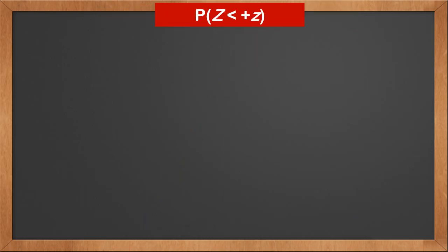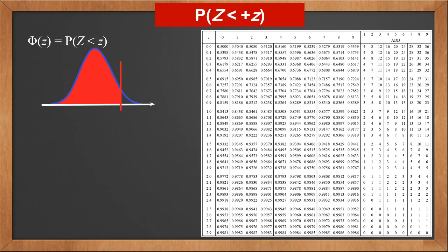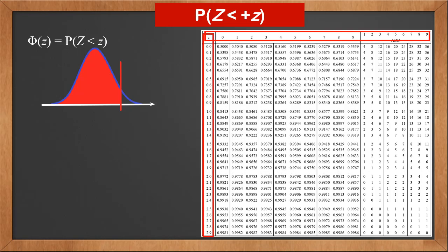Now we'll learn how to find probabilities of the standard normal distribution from a lookup table. First, let's introduce a symbol phi(z). It is P(Z < z) — just a simpler notation. On the graph, it is the area to the left of z. Here's the lookup table, or z-table. The outside is z values, and the inside is phi values, or probabilities.